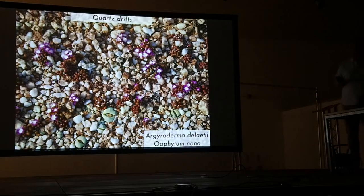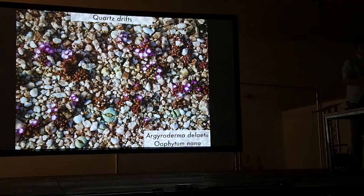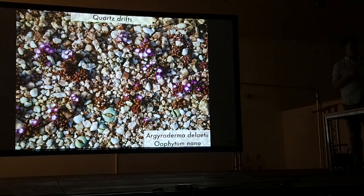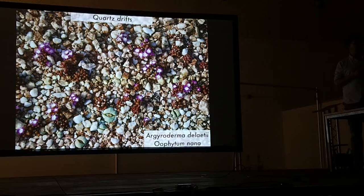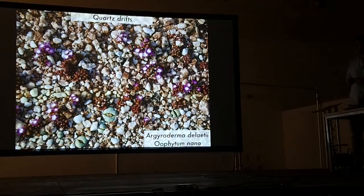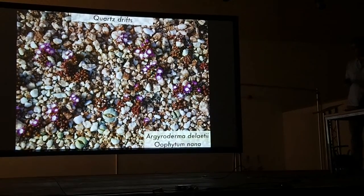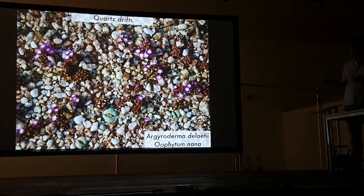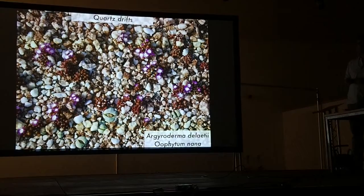Quartz drifts are found throughout the succulent Karoo — in Namaqualand and also in the Richtersveld. They're really fascinating because they create a very unique environment for plants. Because they're white and reflect sunlight and heat, they're actually a lot cooler than the general surrounding environment, which means a greater diversity of plants can grow there. You find a lot of succulent Aizoaceae growing there, like this Ihlenfeldtia here, nicely camouflaged in the quartz field, and Euphorbia — and Nanum with purple flowers.